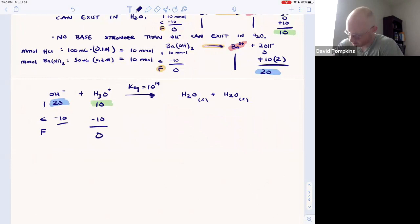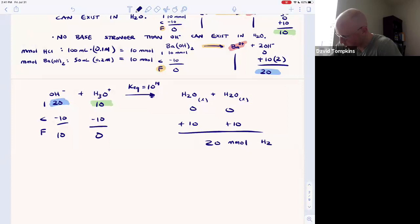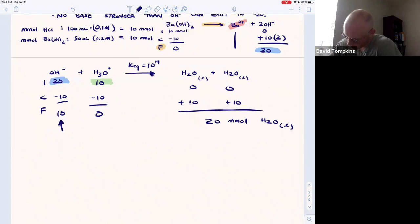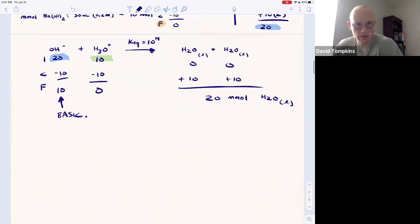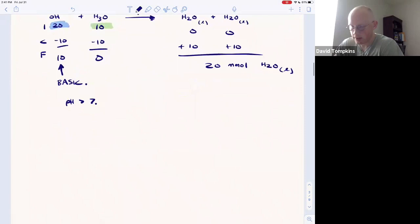So this reaction is going to run until the limiting reactant hydronium runs out and you're left with 10 millimoles of hydroxide and 20 millimoles of water. Now water is the solvent, it's not going to affect the pH. 10 millimoles of excess hydroxide is going to cause there to be a basic pH, so we know the pH for this solution should be greater than 7.